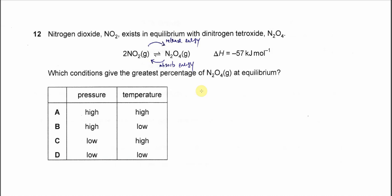Nitrogen dioxide, NO2, exists in equilibrium with dinitrogen tetraoxide, N2O4. The enthalpy change is negative 57 kilojoules per mole, so it's exothermic.